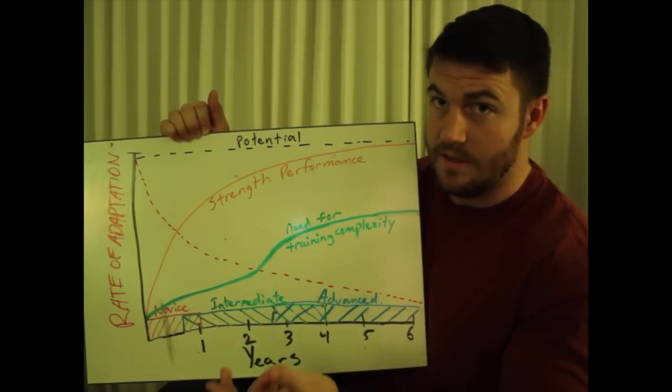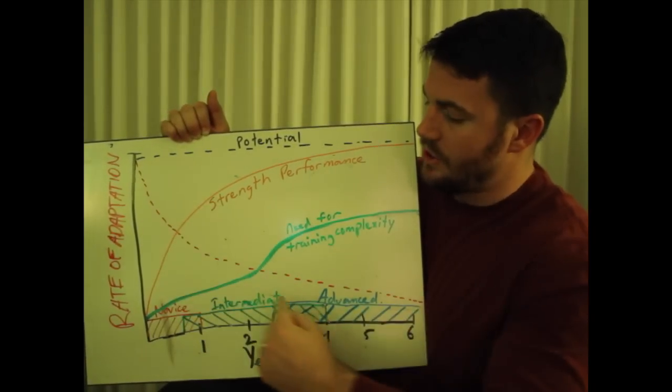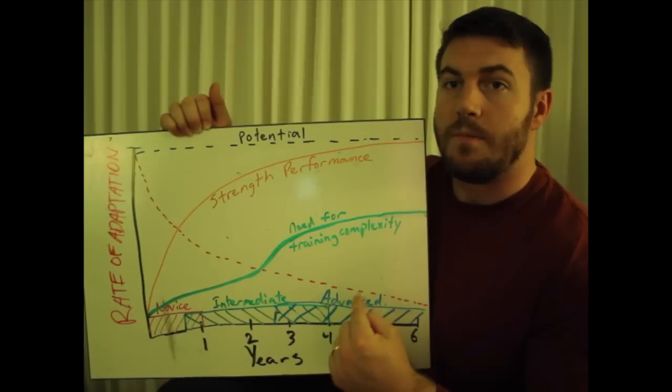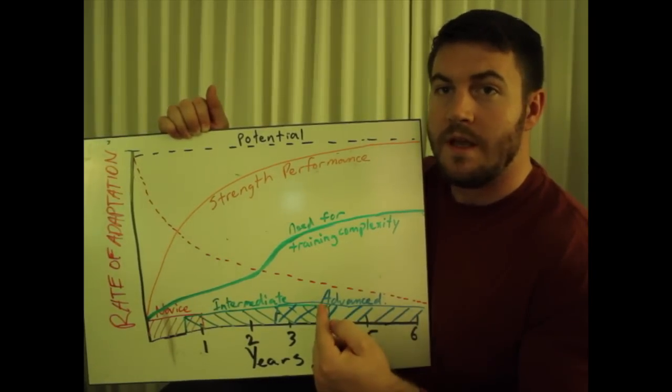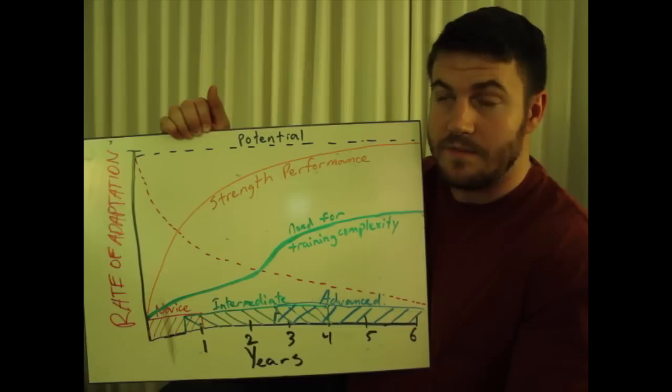This will make more sense when we talk about the distinctions of novice, intermediate and advanced in the next video. But over years of training, the rate of adaptation decreases because your body becomes more adept at adapting to the stimulus and the stressors that it experiences.